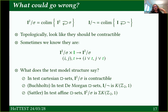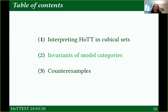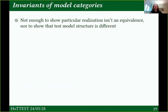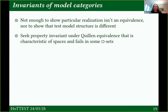It's not always obvious what these objects should be, and it's not obvious what they are within our type theory. If we want to show that one of these things isn't spaces, it's not enough to show that some particular comparison isn't an equivalence. It's not enough to show that something geometrically looks contractible but isn't, and it's not enough to show we're different from the test model structure, because there could still be some equivalence out there that we haven't found. What we're looking for is some kind of property invariant under equivalence of model categories, characteristic of spaces, and failing in some of these cubical sets.